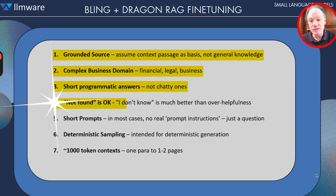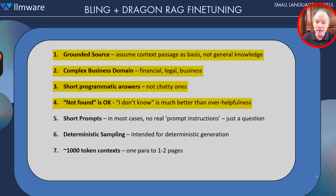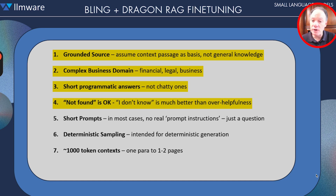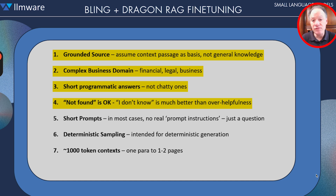Not found is actually a defining characteristic of these models. If the information is not found in the grounded source, we provide a lot of negative samples in our fine-tuning so the model will respond consistently and categorically 'not found.' We believe 'I don't know' is a lot better than over-helpfulness — certainly better than filling in the gaps and making things up or drawing on some form of general knowledge.